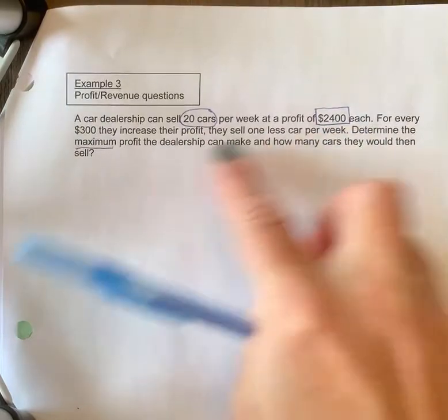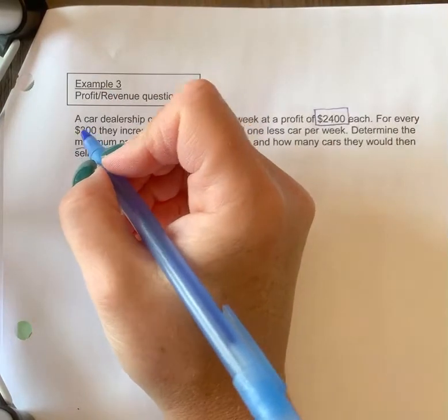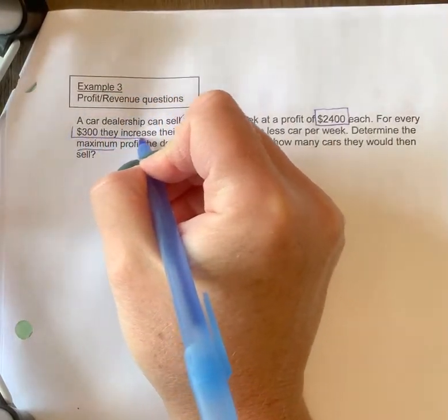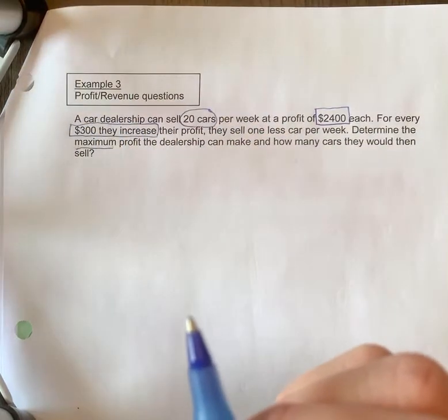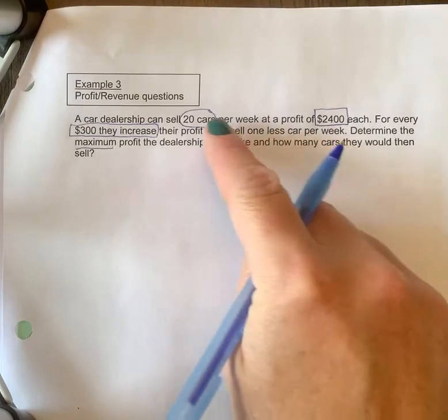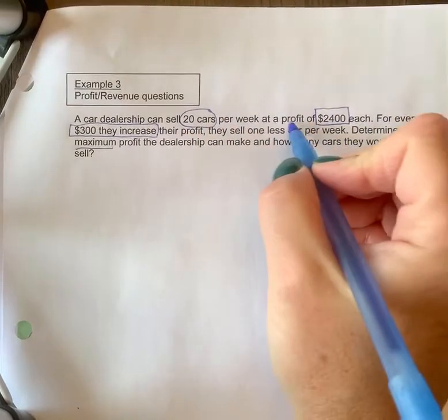Okay, so $300 is linked to the $2,400—you're going to be comparing money, so I'm going to put a box around that. And it increases, so there's always one that's going to increase and one that's going to decrease in these questions. Then they sell one less car per week, so our unit is cars, so one less car, so we're going to circle that.